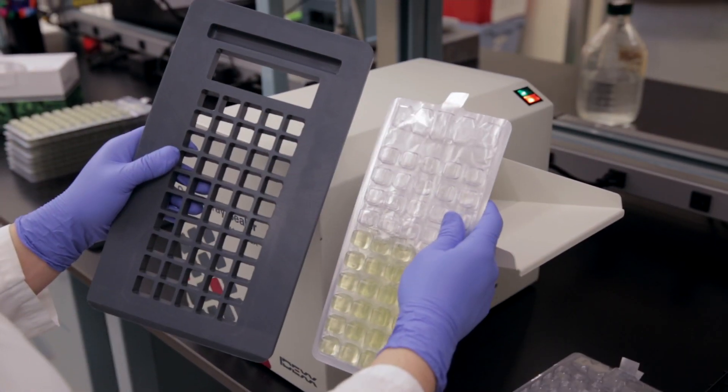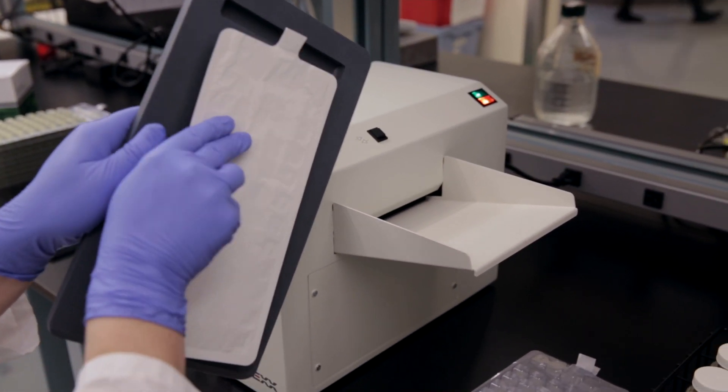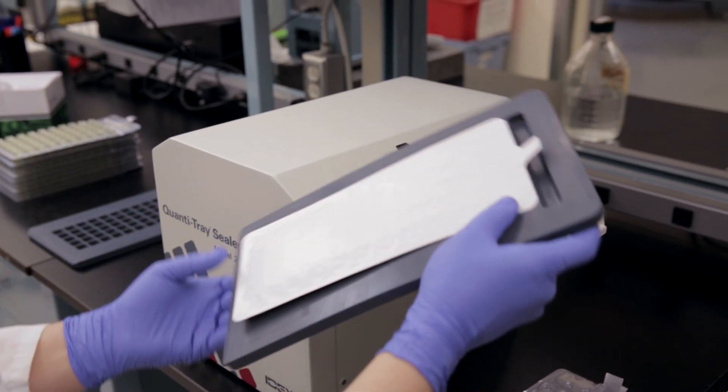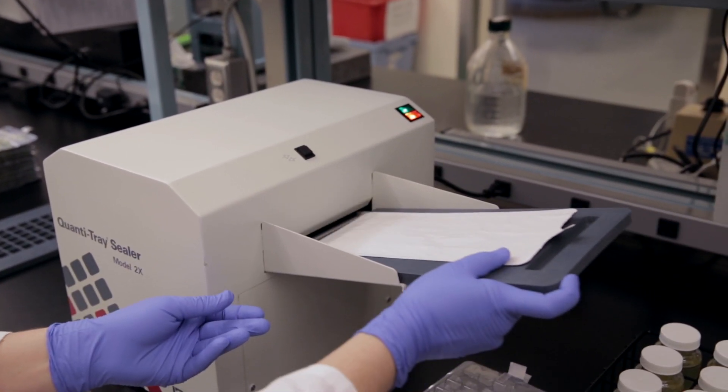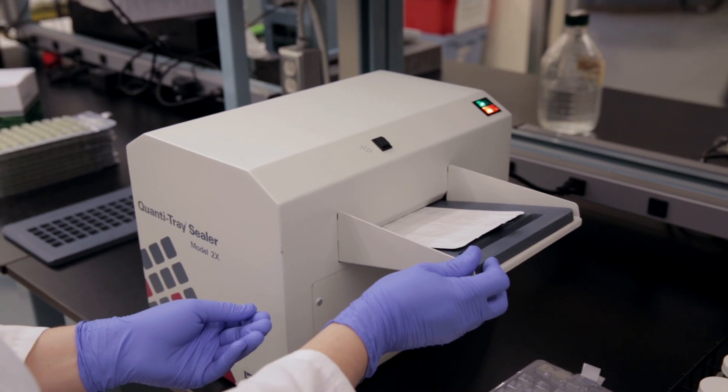Place the filled Quantitray on the rubber insert, making sure each well fits its corresponding hole. Push the insert with the tray into the sealer until the sealer grabs the tray and pulls it into the slot.